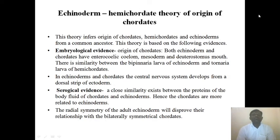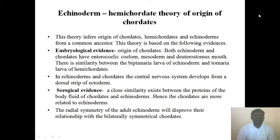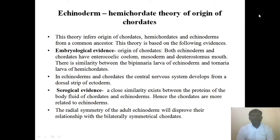The next theory is the Echinoderm-Hemichordata theory of the origin of chordates. This theory infers that chordates, hemichordates, and echinoderms all originated from a common ancestor. The embryological evidence shows that both echinoderms and chordates have enterocoelic coelom mesoderm and a deuterostome mouth. There is also similarity between the Bipinnaria larva of echinoderms and the Tornaria larva of hemichordates.